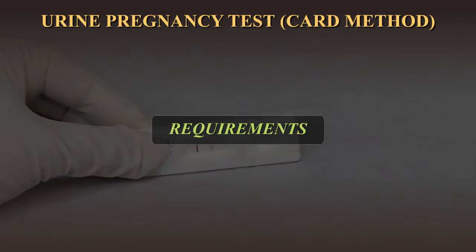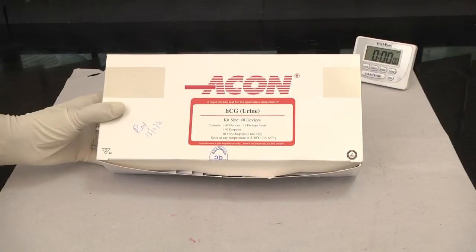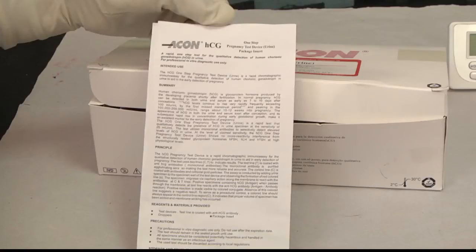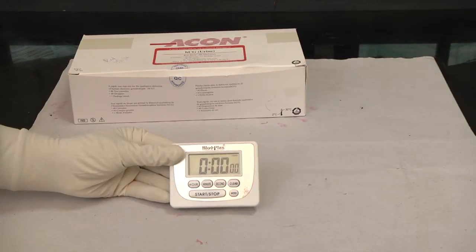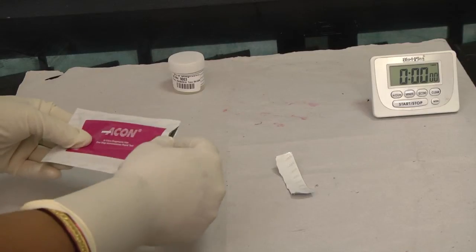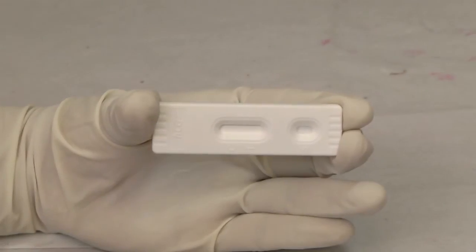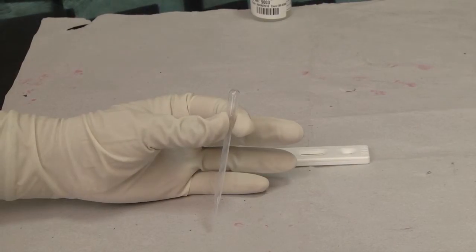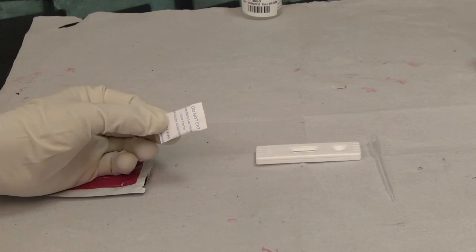Test Requirements: The UPT kit contains pouches of test devices, a kit insert, and a timer. Each pouch contains one test device, one disposable dropper, and one desiccant or moisture-absorbing pouch. The desiccant is not required for performing the test.